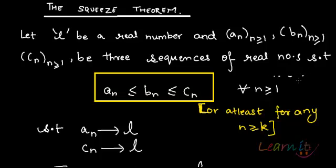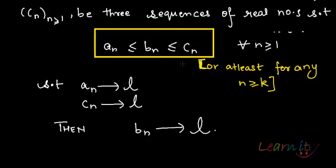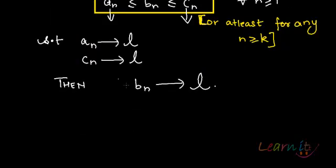So after k terms, b_n is within a_n and c_n. Additionally, sequence a_n is converging towards L and sequence c_n is also converging towards L. Then we say that b_n should also converge towards L — that's what we have to prove.